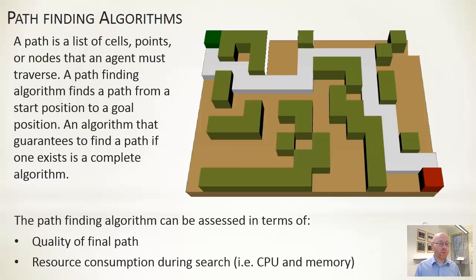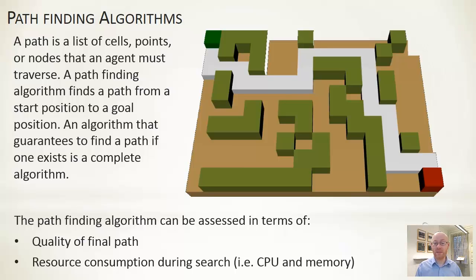Different algorithms will potentially give us different paths, so we need a way to determine which path is better. Most obviously, we assess path quality by distance — are we getting there in as direct a route as possible? Other approaches may look at naturalness of the path. Alongside that, it's important to consider CPU and memory resources required to calculate that path.